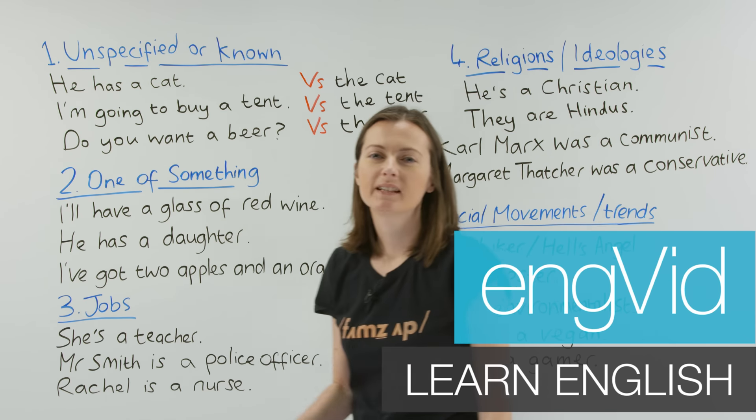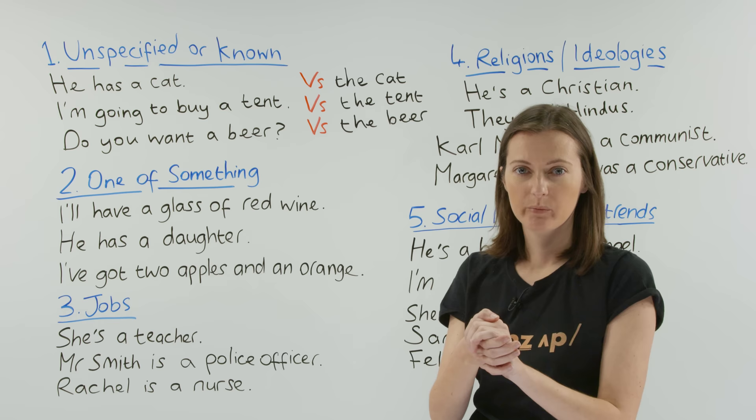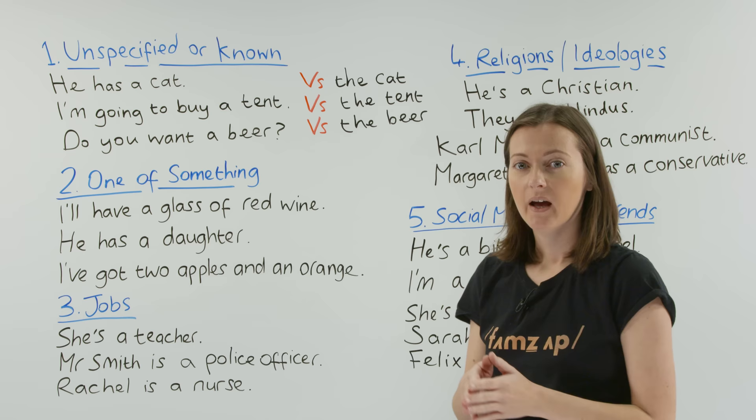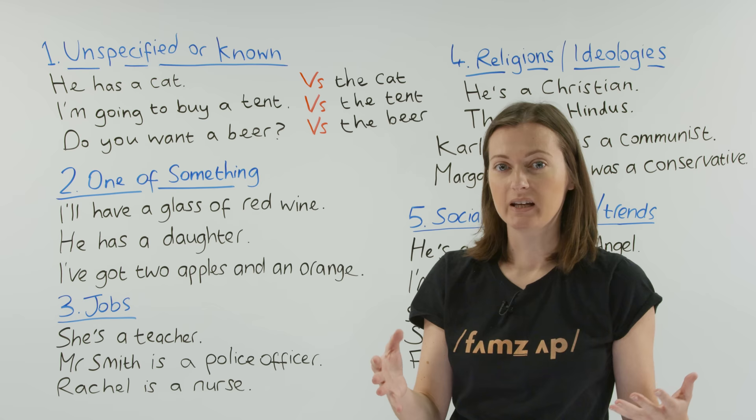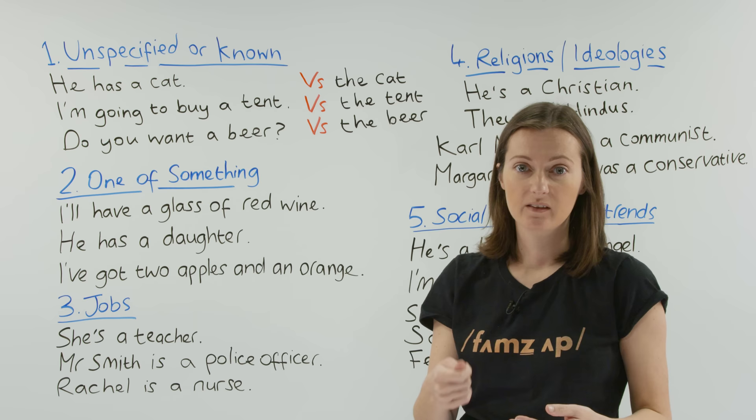Hey everyone. In this lesson we're going to look at when to use 'a' or 'an'. In these sentences, if we remove 'a', sometimes the sentence is grammatically incorrect or it sounds wrong. Sometimes the sentence is still correct, but it changes the meaning. So this lesson is about when we need to use 'a' or 'an' instead of 'the' or not having it at all, so that we get the correct meaning.